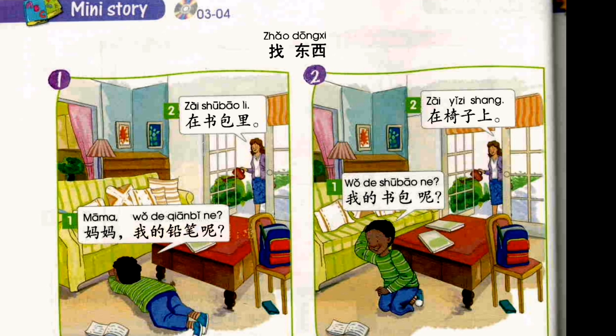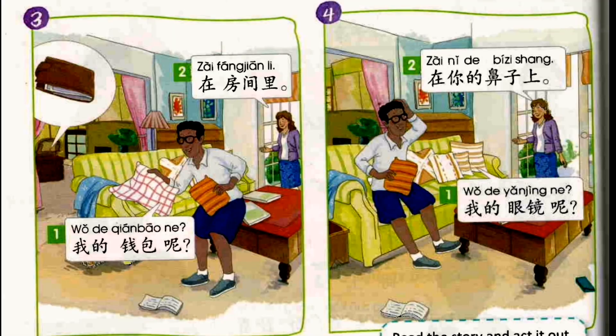Mini Story: 找东西。妈妈,我的铅笔呢? 在书包里。我的书包呢? 在椅子上。我的钱包呢?